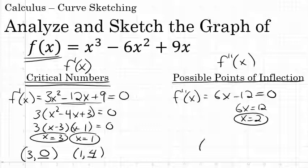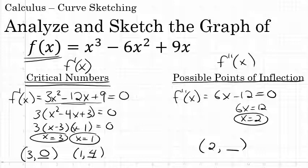Like the critical numbers, I'll write this as an ordered pair — a point that will actually be on the graph. Substituting 2 into the original function: f(2) = 2³ - 6(2²) + 9(2) = 2. So the point is (2, 2). The second step was to find the possible points of inflection, which come at x values where the second derivative equals zero. Here we found x = 2 with the associated point (2, 2).